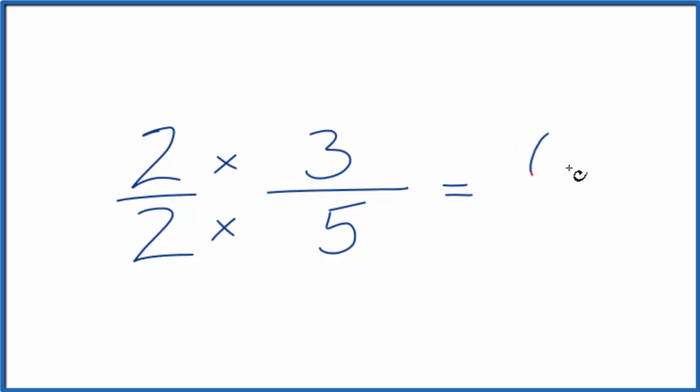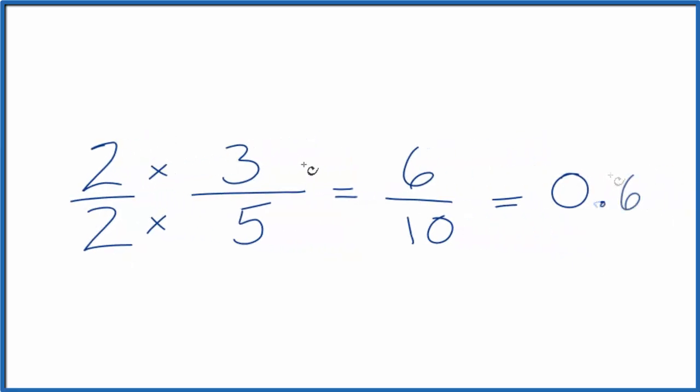So 2 times 3 is 6, 2 times 5 is 10. So 6 tenths, that's the equivalent fraction to 3 fifths. If you divide 3 by 5 or 6 by 10, you get 0.6. 3 fifths and 6 tenths are equivalent fractions.